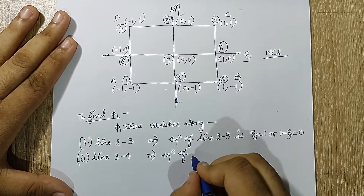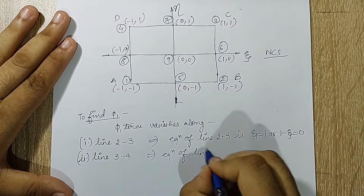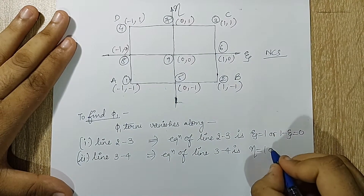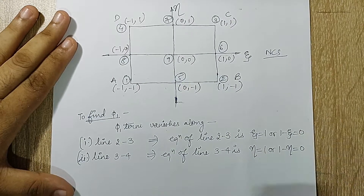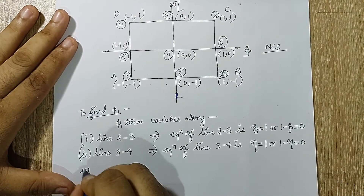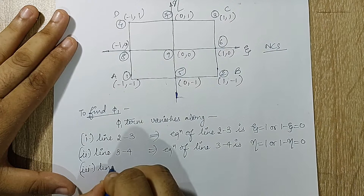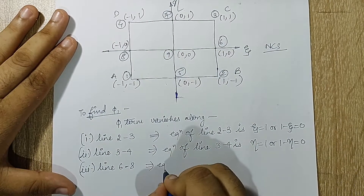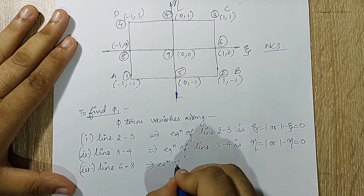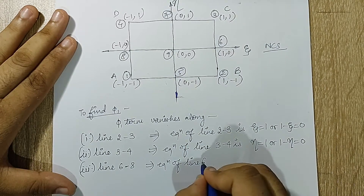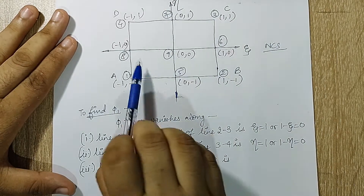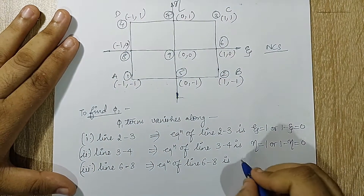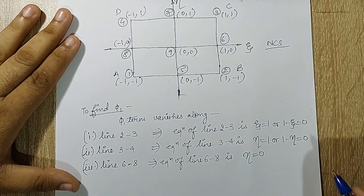The equation of line three-four: eta is equal to one, or one minus eta is equal to zero. Next I will go for the third line, that is six-eight. When you look at line six-eight, you can see eta is zero everywhere, so I write eta is equal to zero.